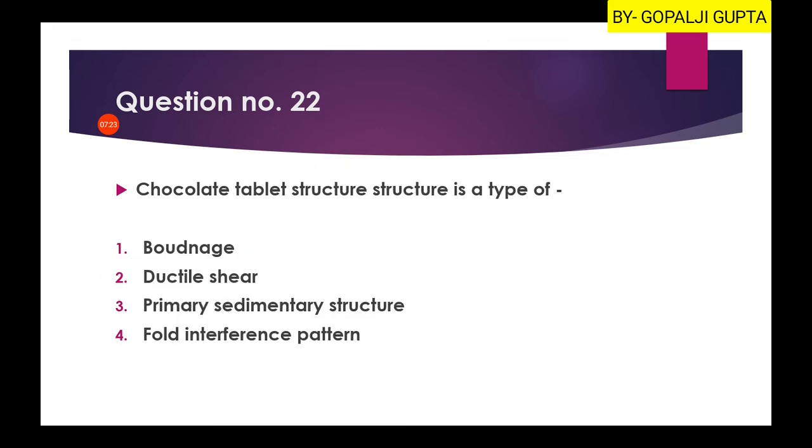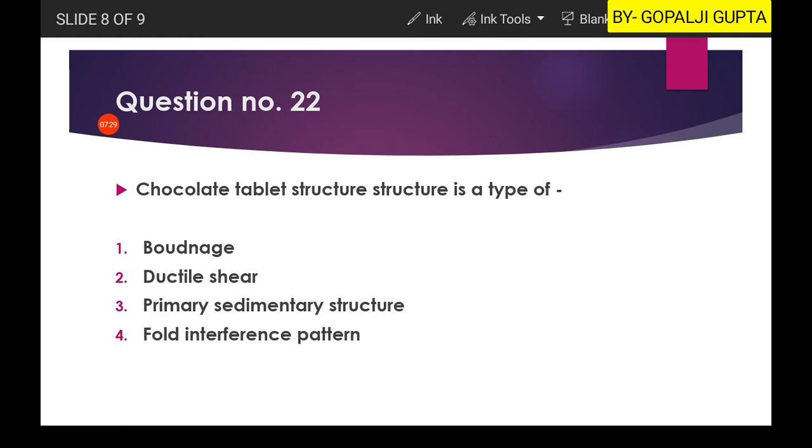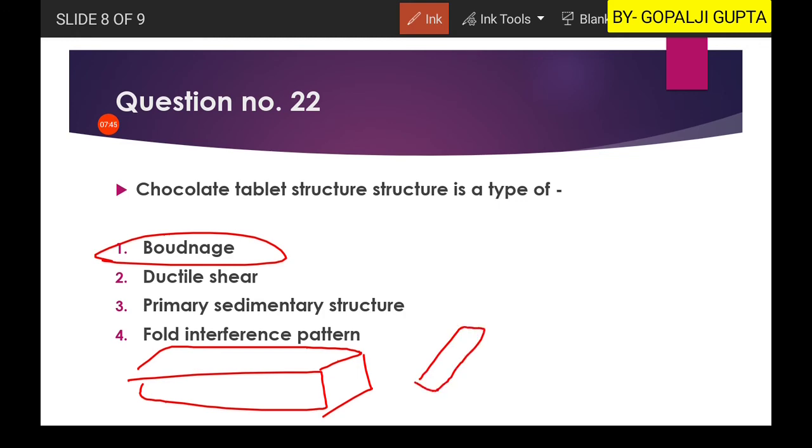Now 22nd and last question is: the chocolate tablet structure is a type of? So chocolate tablet structure is a type of boudinage. And as you know how the boudinage looks, you have a layer like this, and because of deformation it breaks down into the several parts like this. So this is the boudinage type of structure.